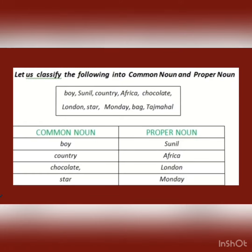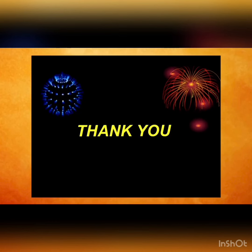A common noun is a general name of a person, place, thing, or animal. A proper noun is a specific name of a person, place, thing, or animal. Dear students, keep on practicing. Thank you.